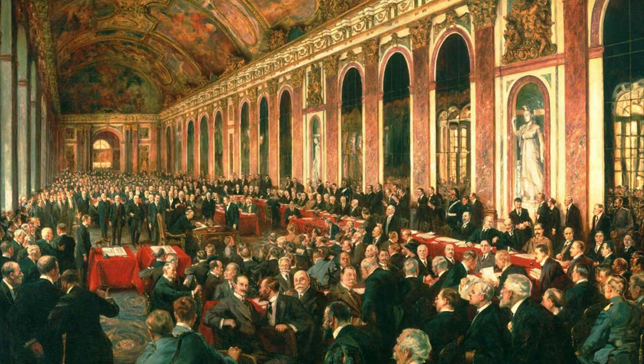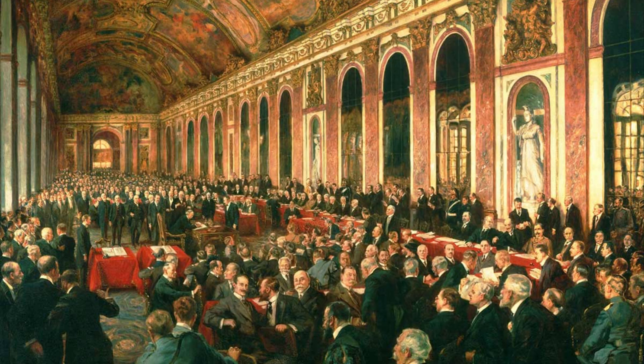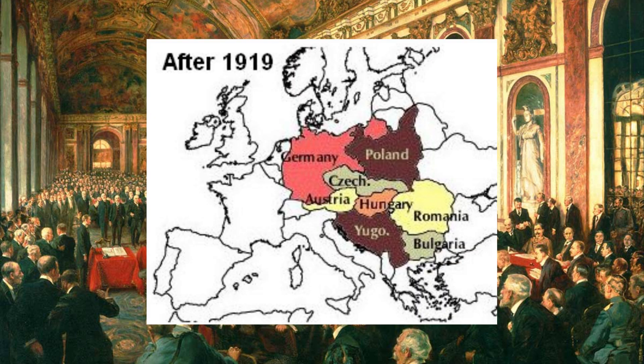Other historians note that the Treaty of Versailles was actually very restrained — Germany and other central powers were not occupied by Allied forces after the war. However, it would take Germany several decades to pay off their reparations. The Treaty was also much more lenient than the Treaty of Brest-Litovsk, which Germany forced on Russia when that nation negotiated an exit from the war a year earlier.